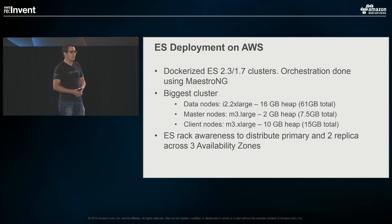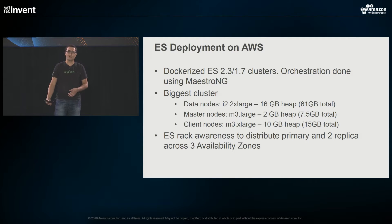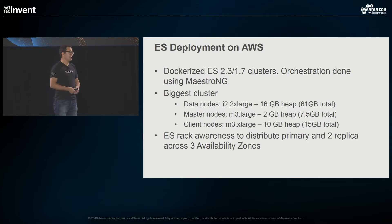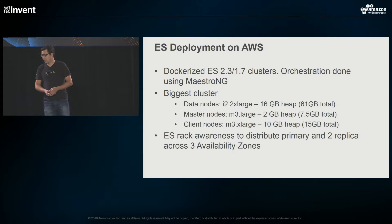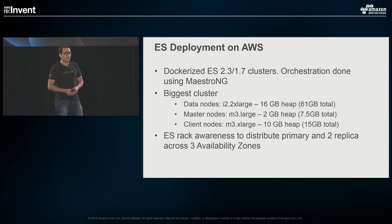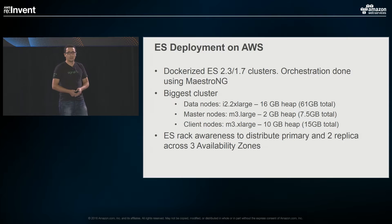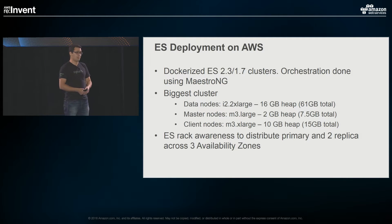The way we deploy this on AWS: we use Docker — it makes everything easier from a development and production standpoint, so what you do in development is very similar to what you do in production. We've been using Docker since day one. We use a mix of Elasticsearch versions 2.3 and 1.75, and we've been trying to migrate everything to the 2.x release. We orchestrate all these Docker containers using an open-source framework called maestro-ng, written by one of our engineers. For the data nodes, we use i2.2xlarge nodes — these come with 61 gigs of memory, but we only use 16 gigs. In the past we ran with 31 gigs, and we noticed performance improvements when we reduced to 16 gigs.